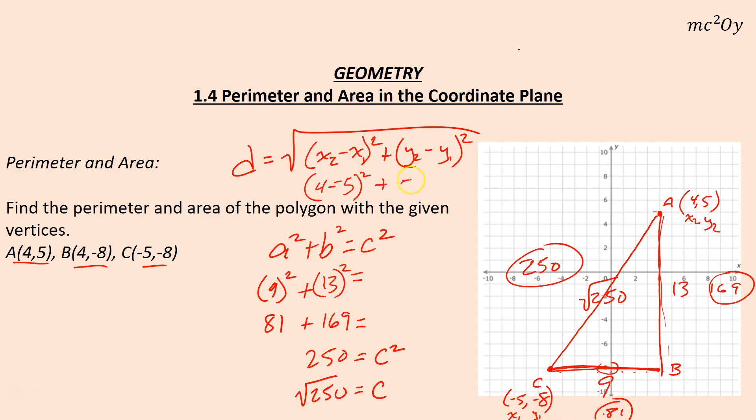If you were to plug all that into the distance formula, that would be (4-(-5))² + (5-(-8))². That would end up giving you 9² or 81 again, and 13² or 169. Same thing, and then you end up taking the square root and you get √250.